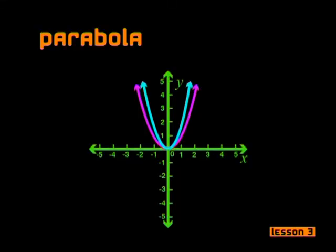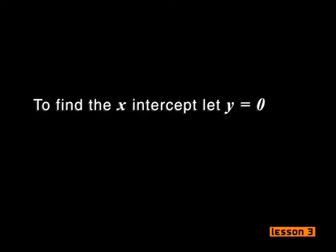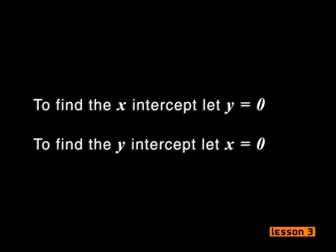Let's quickly review what we know so far. We know how to find the general shape and position of the graph, and how to find the turning point. Since we don't know how thin or wide the graph is going to be, we need more information to sketch it accurately. What else would we need to know? We would need to know where the graph intersects the x and y axes. That's right. And to find the intercepts, it's the same method we use for any graph: to find the x-intercept, let y equal zero; to find the y-intercept, let x equal zero.